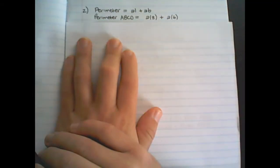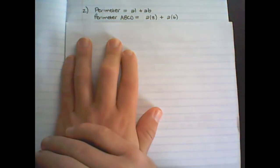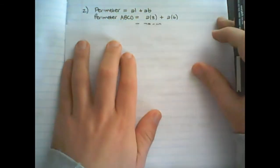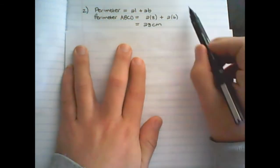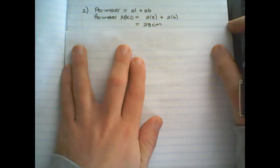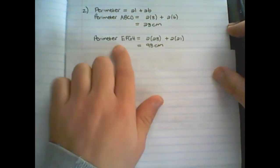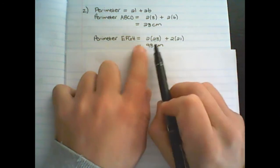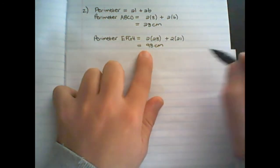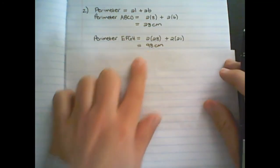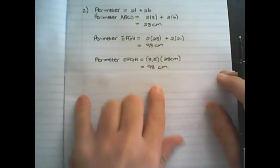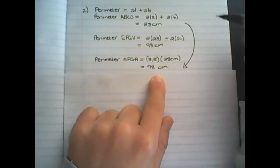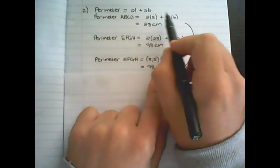We can also use the scale factor to determine the impact on the perimeter. The perimeter of ABCD would be two lengths plus two breadths, which is 28 centimeters — that is the distance around ABCD. The perimeter of the new diagram is two lengths plus two breadths, which is 98 centimeters — that is the distance around the enlarged figure.